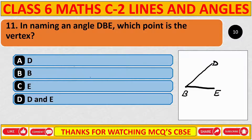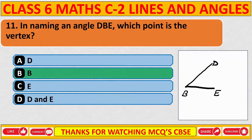In naming an angle DBE, which point is the vertex? The correct answer is B: point B.